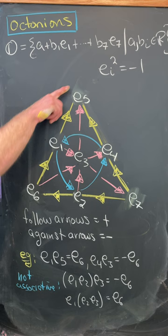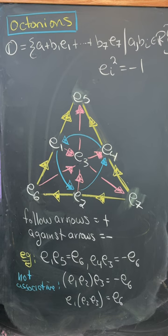But if you do E4 times E3, you get negative E6. But like I said, this is non-associative. You can check that E1 times E2 times E3 is not the same thing as E1 times E2 times E3.